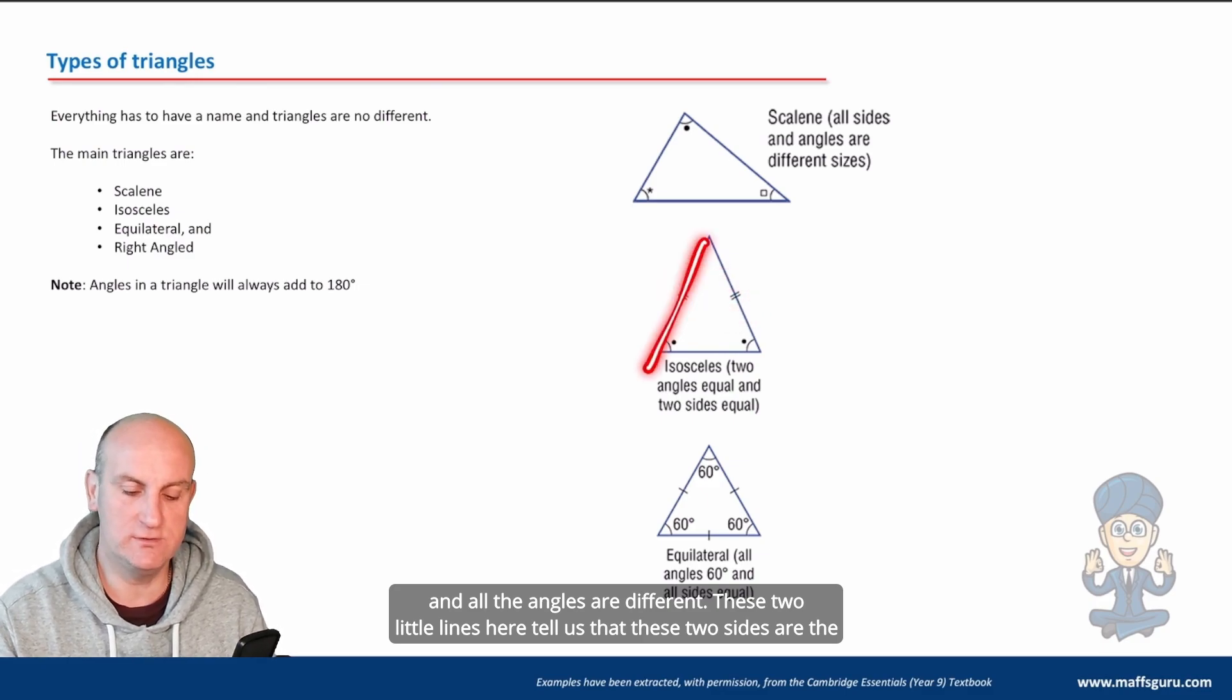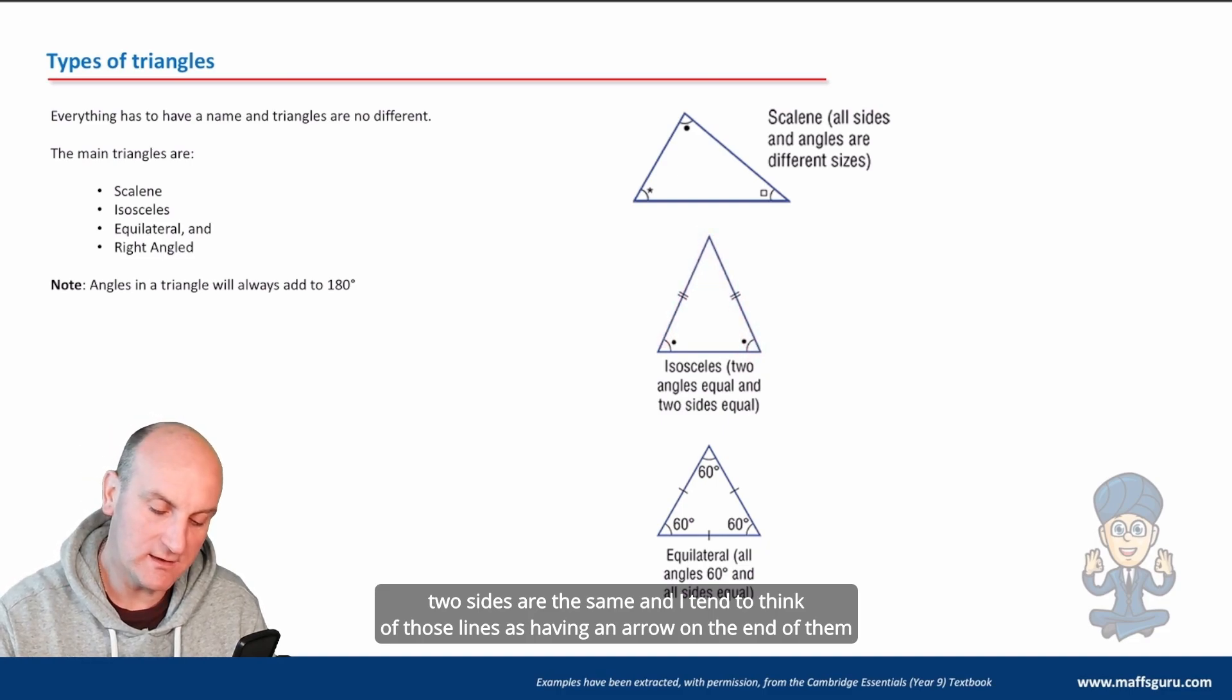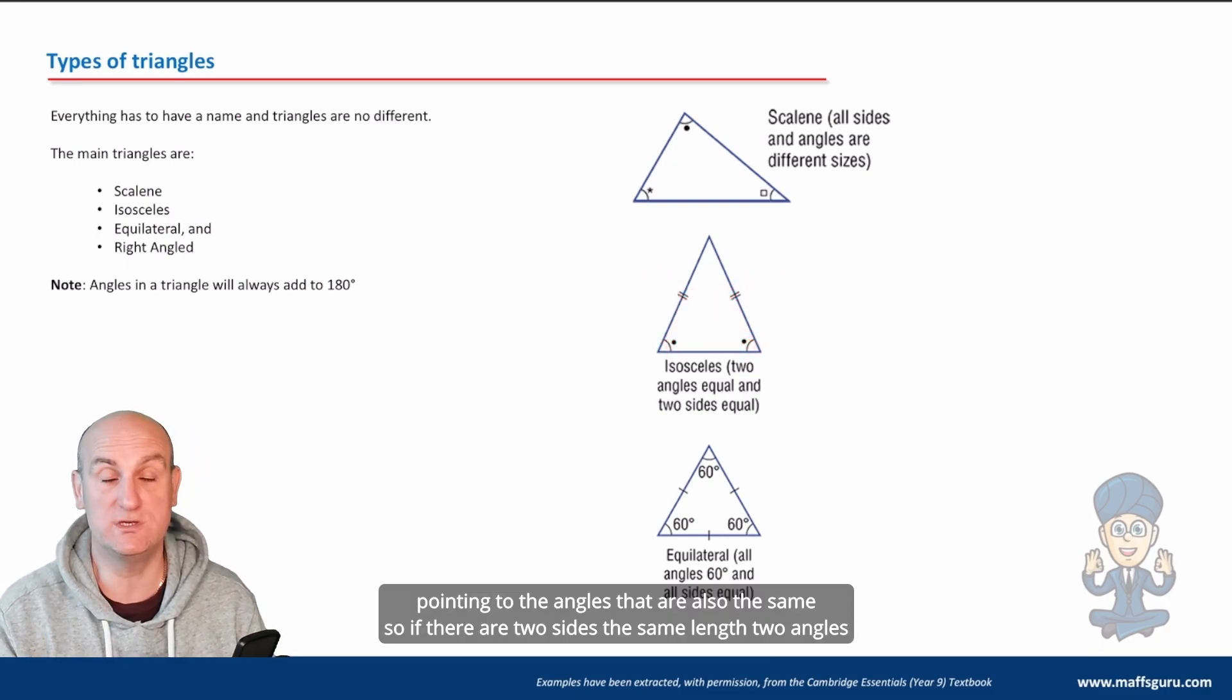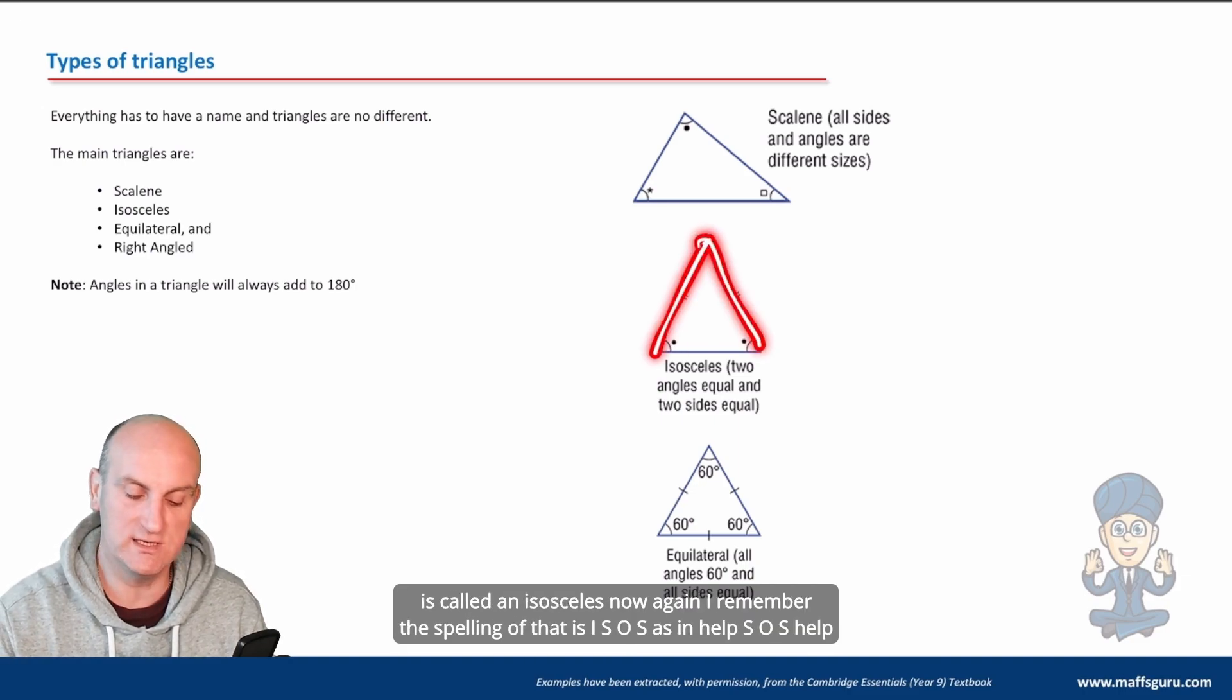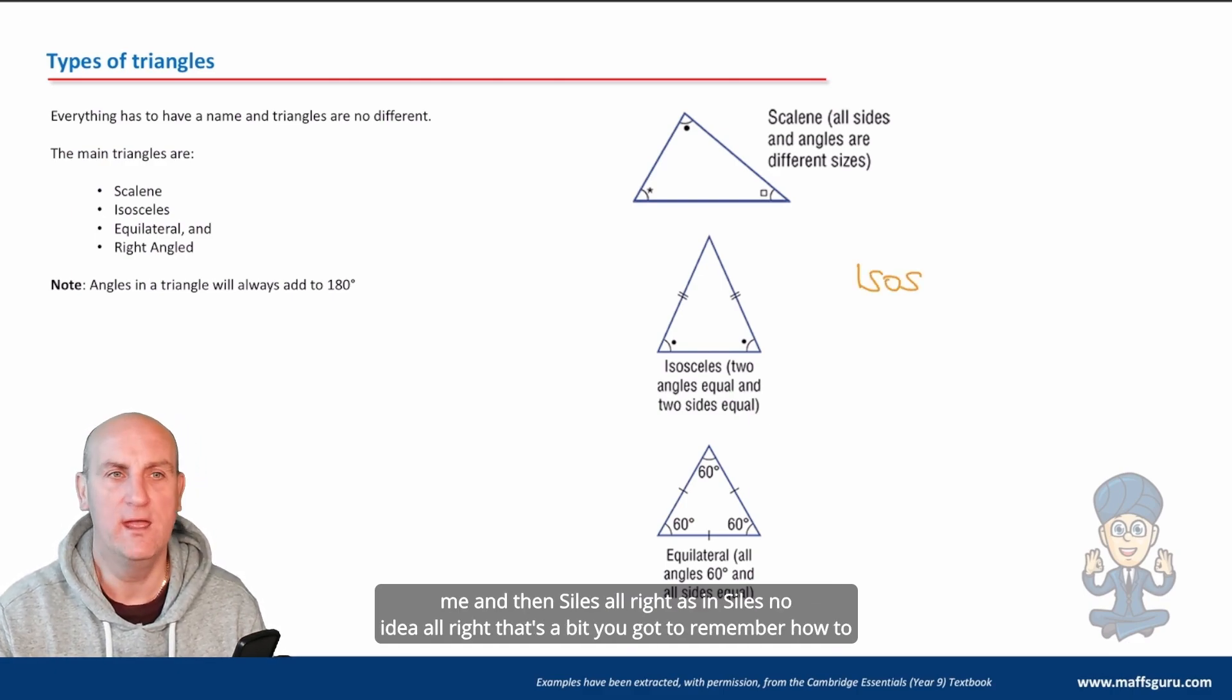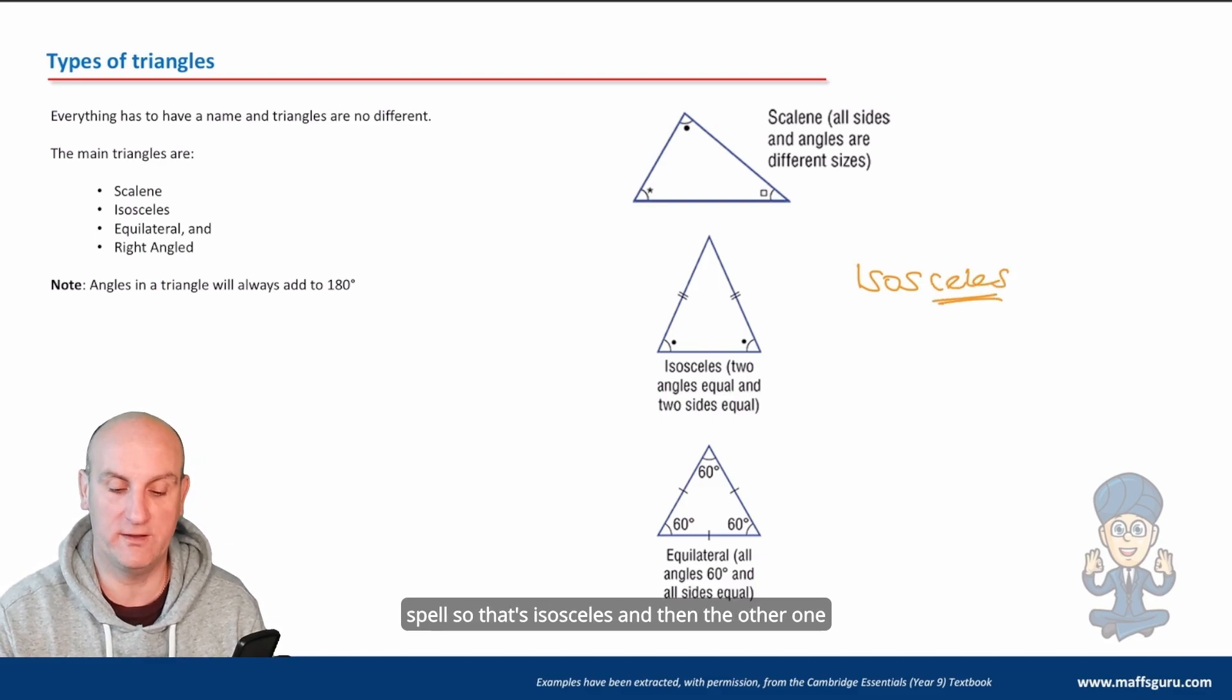These two little lines here tell us that these two sides are the same length. There's nothing on this side here so I don't know how long that is. All I know is those two sides are the same. I tend to think of those lines as having an arrow on the end of them pointing to the angles that are also the same. So if there are two sides the same length, two angles will be the same size as well. That triangle is called an isosceles. I remember the spelling as I-SOS as in help SOS, and then -celes.